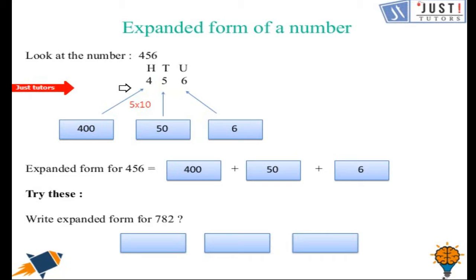Then here we have 4 hundreds. That will be same as 4 times by 100 and that is 400. So expanded form for 456 would be 400, add 50, add 6.